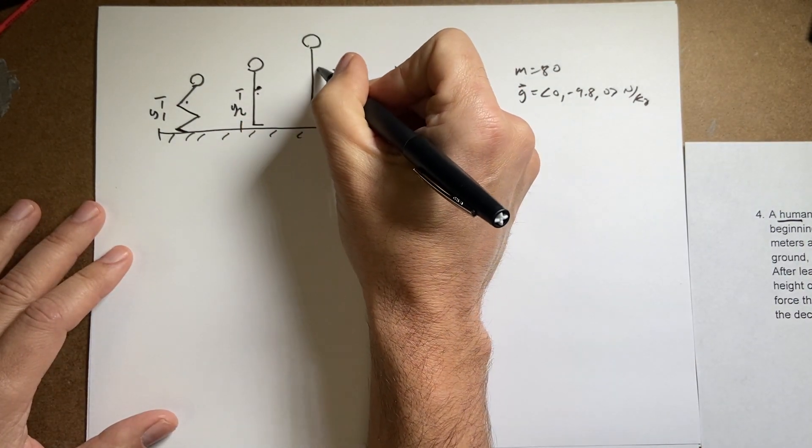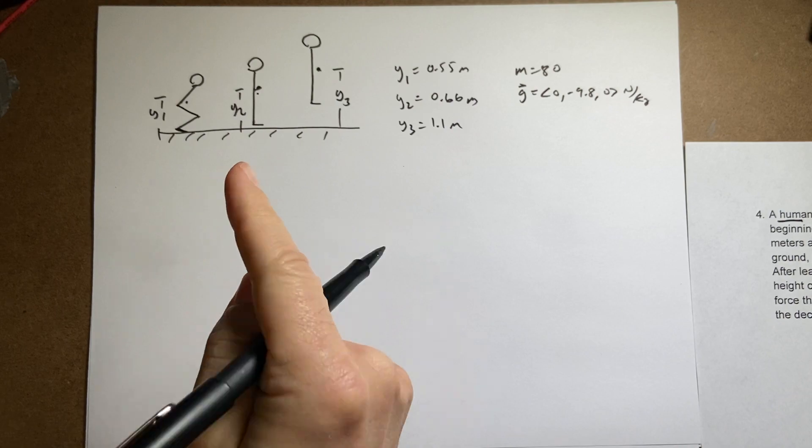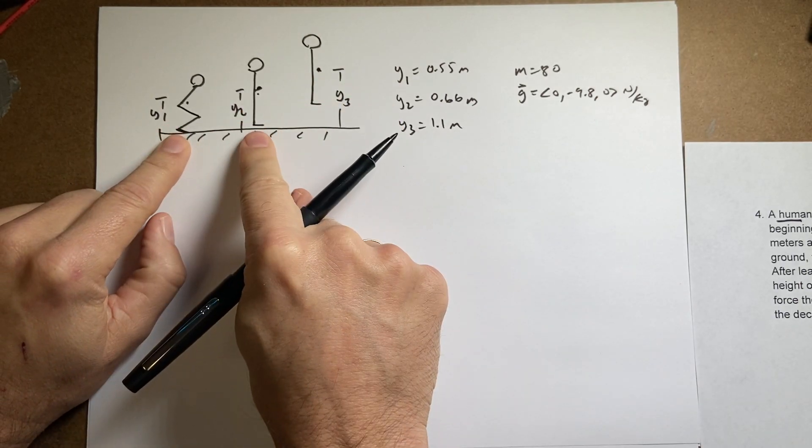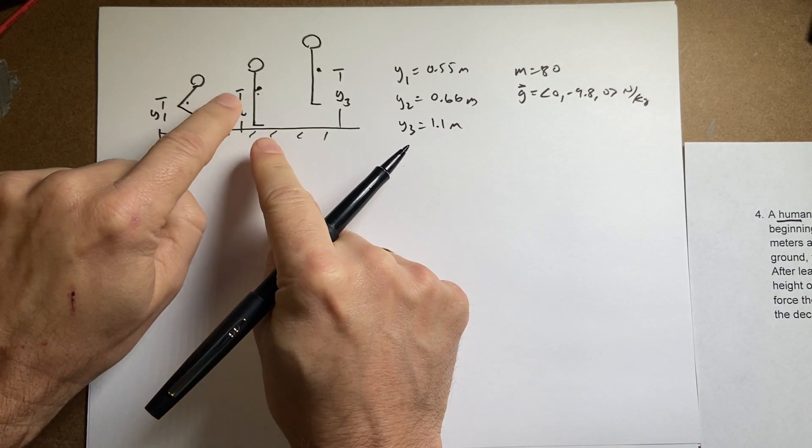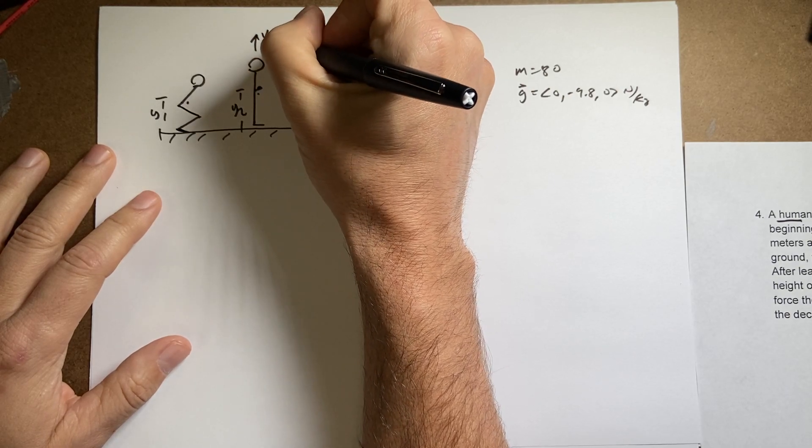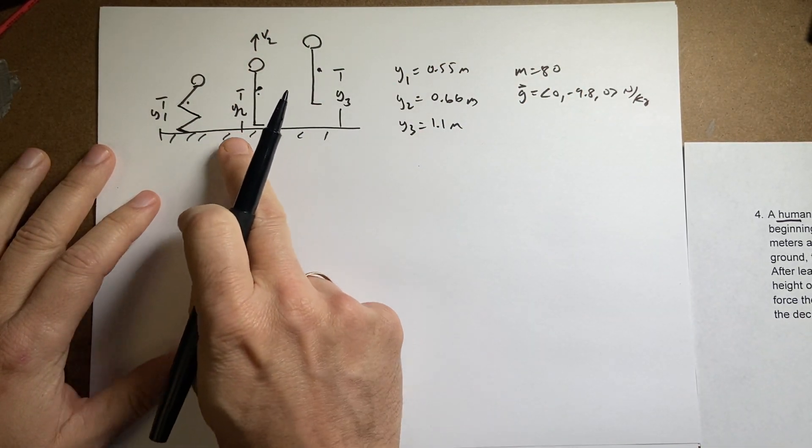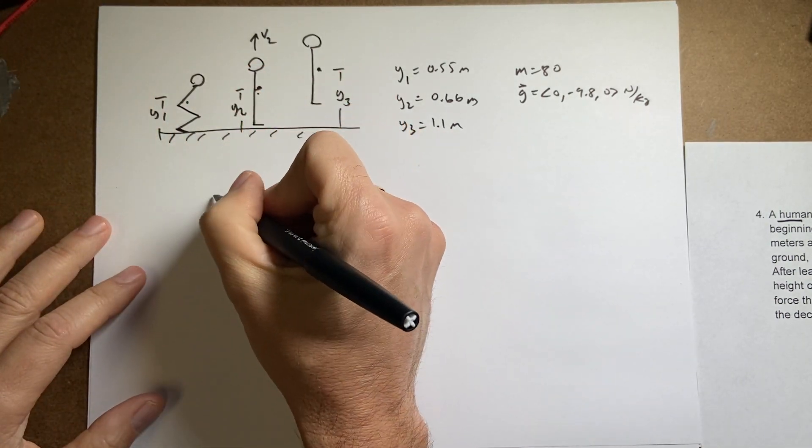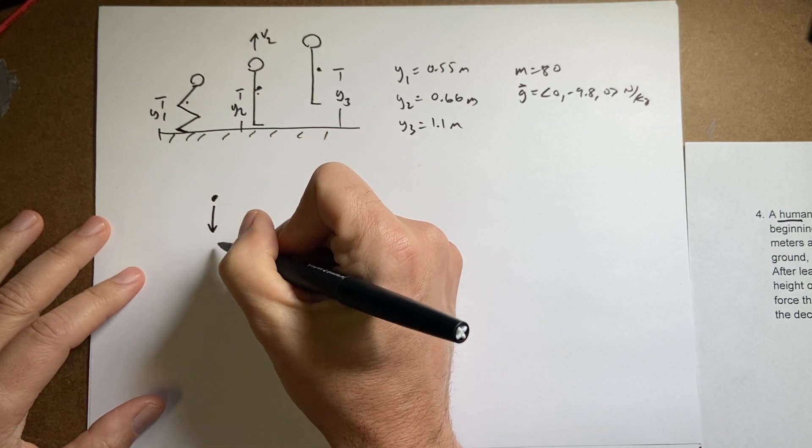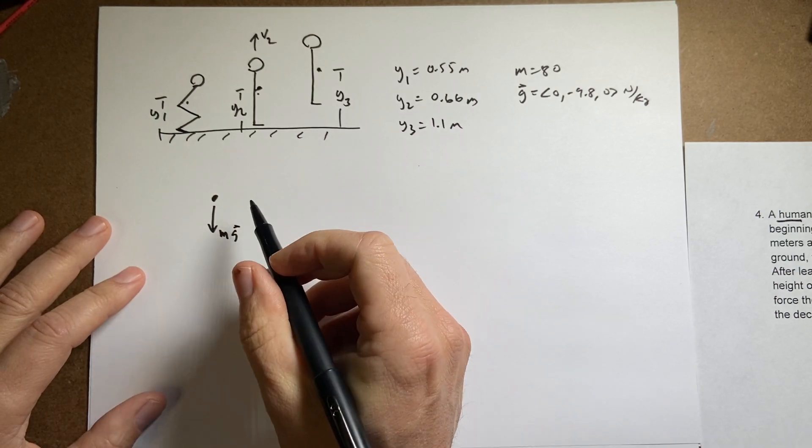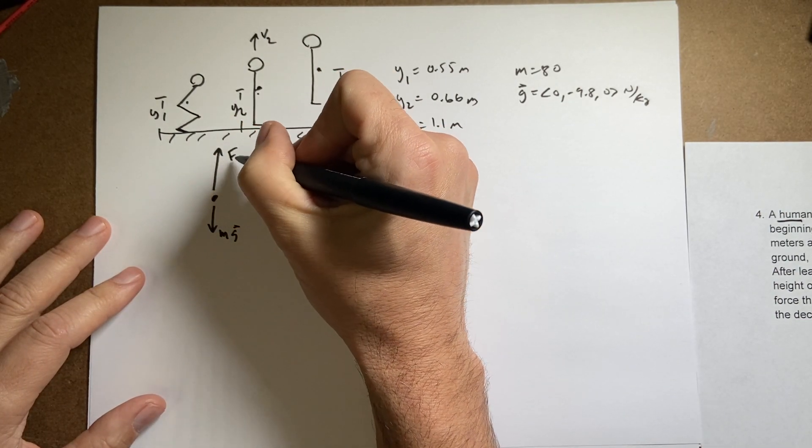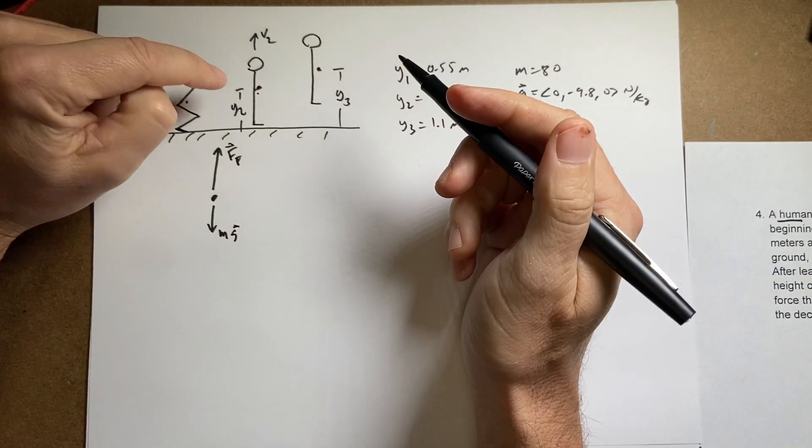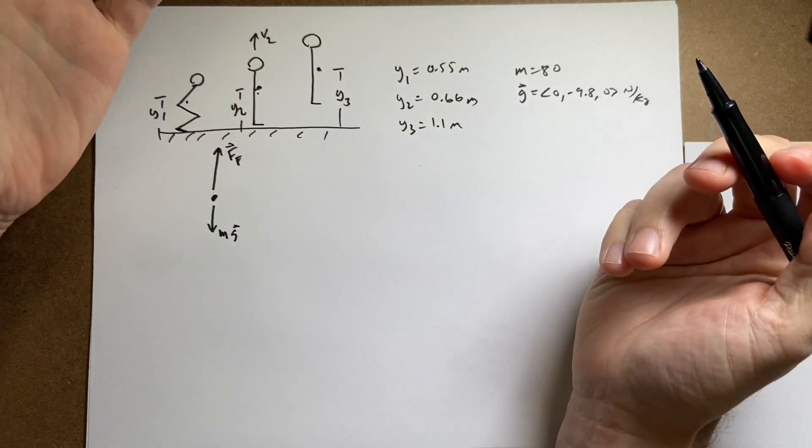So we want to find the force that the floor exerts on the human. During this time right here, the person starts at rest. And right here, they're moving with some velocity upward. I'll call that v2. And then here, they're stationary again. So in order to go from a zero velocity to some velocity, there had to be some force pushing them up. So during this time interval, there's the gravitational force mg from the earth, and then the upward force from the floor, ff. And that's what we want to find, that force the floor exerts on the person. And the person exerts on the floor, they're the same. Equal and opposite forces.